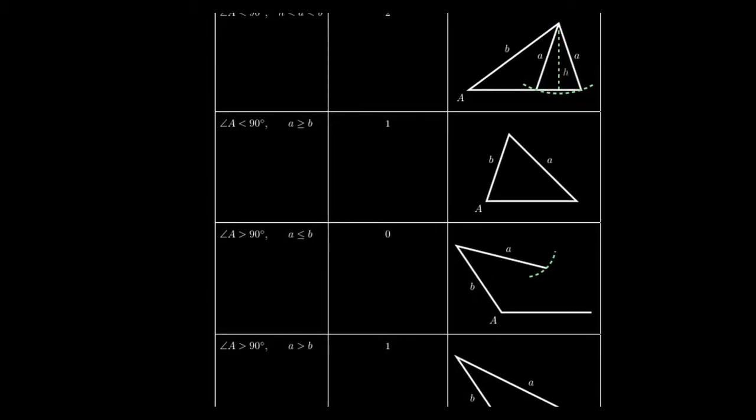Another situation for which the angle A that's given is still acute: if a is greater than or equal to B, maybe A is the longer side in that situation. That would lead to exactly one triangle. This AOS is larger than B, so that would force B to be an acute angle.